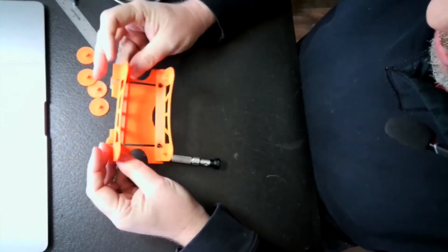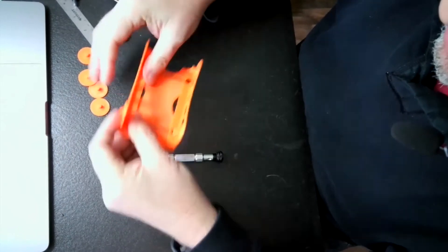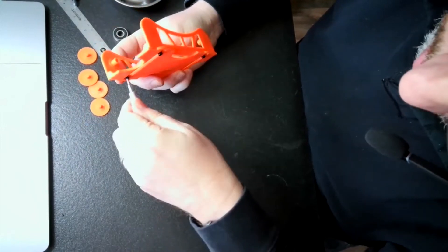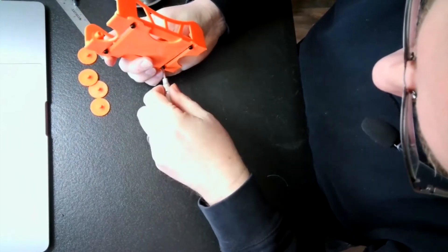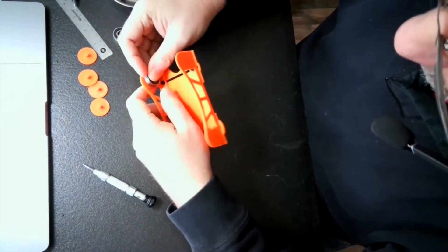So once I have the screws in, I just make sure they're loose enough where I can still move the sides so I can make adjustments depending on my roll size. I'm going to go ahead and put the bearings on. So I slip those on.